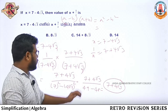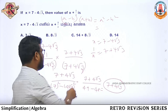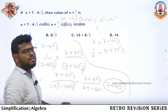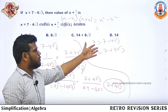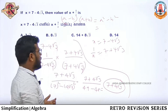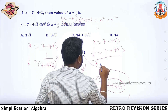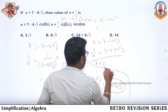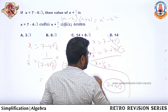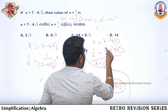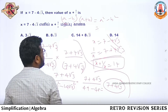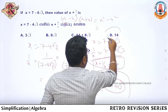This is the first step. Then x plus 1 by x equals (7 minus 4 root 3) plus (7 plus 4 root 3) equals 14. The answer is option D, 14.